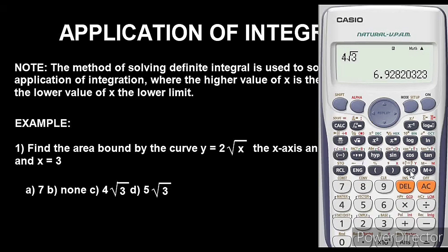So option C is correct because this is exactly what we got when we did the definite integration for this question. So option C is the answer to this question, it's as simple as that. So this is basically how you can solve application of integration using Casio Calculator, very simple.